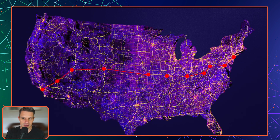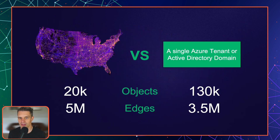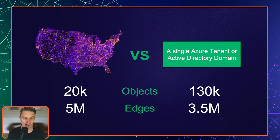If we think about the map of the United States with 20,000 cities connected by 5 million roads, we know that a single Azure tenant or Active Directory domain on average will have around 130,000 objects — users, computers, service principals, virtual machines, you name it.